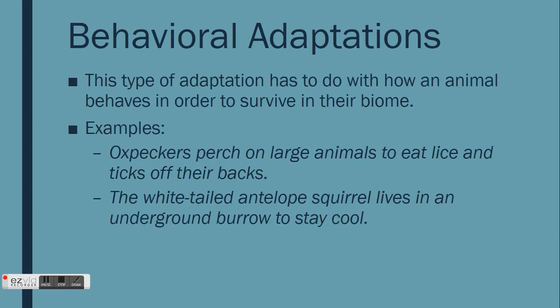The second type of adaptation is behavioral adaptations. Like the name suggests, this type of adaptation has to do with how an animal behaves in certain situations in order to survive in their biome. An example of a behavioral adaptation is that of an oxpecker bird that lives in the grassland biome. They perch or stand on the backs of large animals, such as rhinos, to eat the lice and ticks that live on them. Another example of a behavioral adaptation is the antelope squirrel that lives in the hot desert biome. They live in underground burrows to stay cool and avoid the hot desert sun.